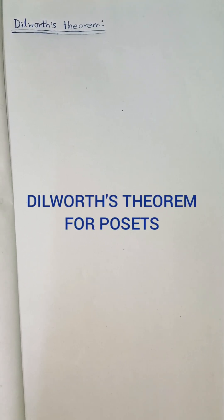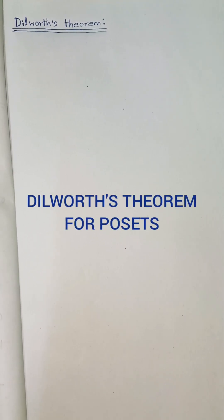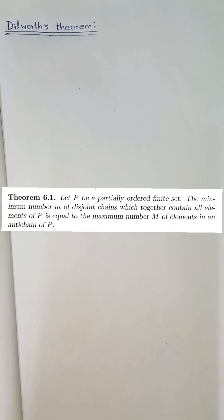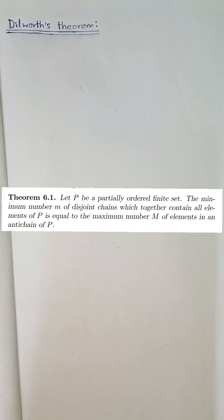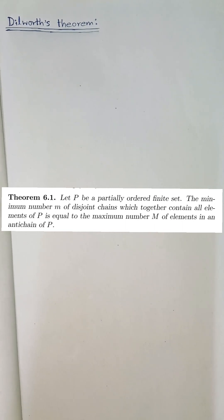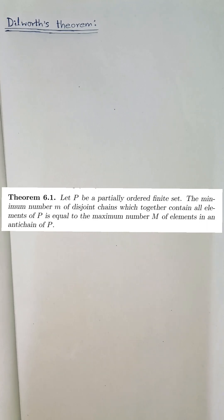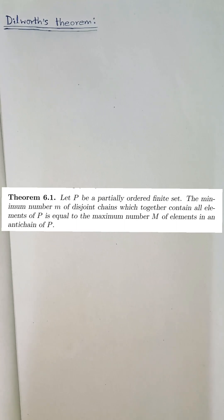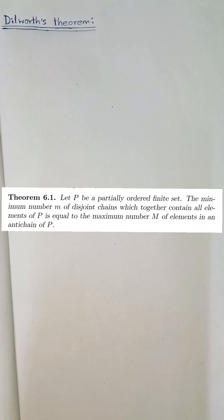In this video, I will show you the proof of Dilworth's theorem and explain it in a very easy way. The statement of Dilworth's theorem says: let P be a finite poset (partial ordered set). Then the minimum number, small m, of disjoint chains which together contain all elements of P — that means the minimum size of a chain cover — is equal to the maximum number M of elements in an anti-chain of P.